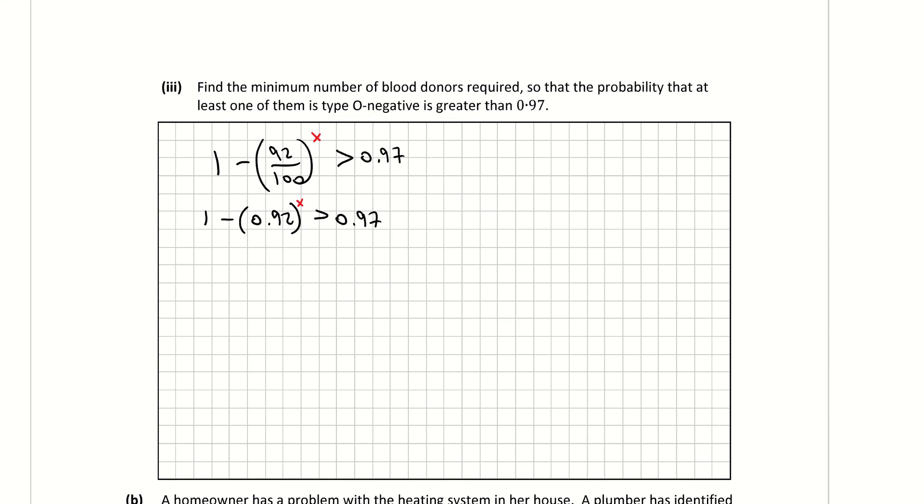I'm going to subtract 1 from both sides, or basically move over that 1, which will give me negative 0.92 to the power of x is greater than 0.97 subtract 1. So that's giving me minus 0.92 to the power of x, greater than 0.97 subtract 1, is negative 0.03.